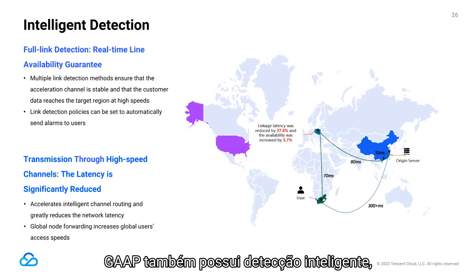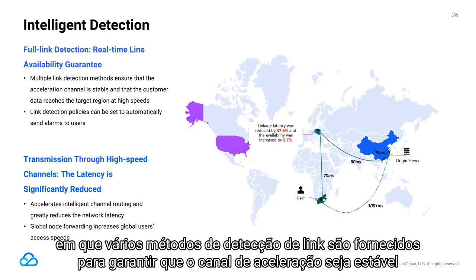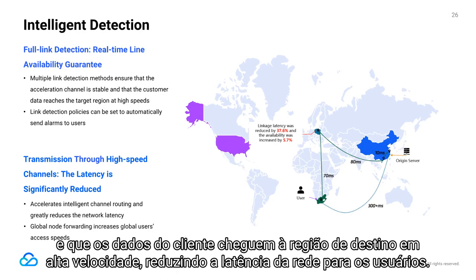GAAP features unified domain name access, enabling players around the world to access high-speed connections nearest to them for simultaneous acceleration. This helps minimize regional differences in network latency, making the gaming experience more fair and increasing player satisfaction and retention. GAAP also features intelligent detection, in which multiple link detection methods are provided to ensure that the acceleration channel is stable and that customer data reaches the target region at high speeds.